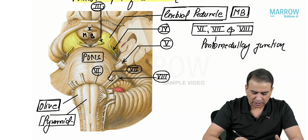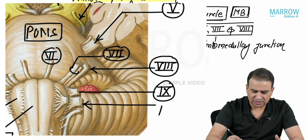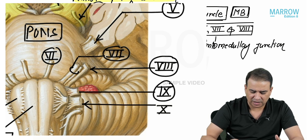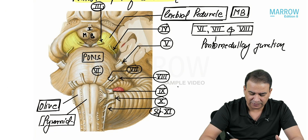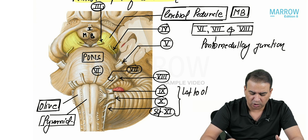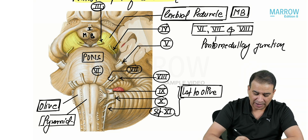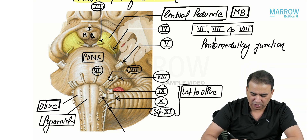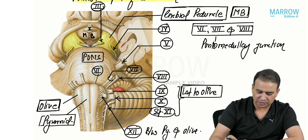Looking further below, you can see the ninth nerve — the glossopharyngeal nerve — then the vagus nerve along with the cranial accessory, and the spinal accessory nerve coming from the spinal cord. So ninth, tenth, and eleventh nerve: these three nerves are emerging just lateral to the olive — posterior lateral to the olive. And the only nerve emerging between the pyramid and the olive is the hypoglossal nerve, the twelfth cranial nerve, whose multiple rootlets come out between the pyramid and the olive.